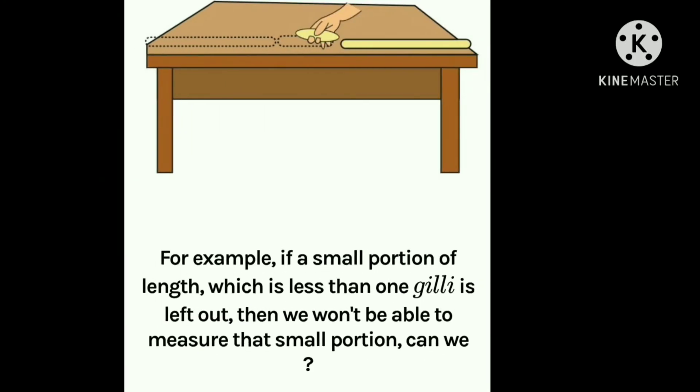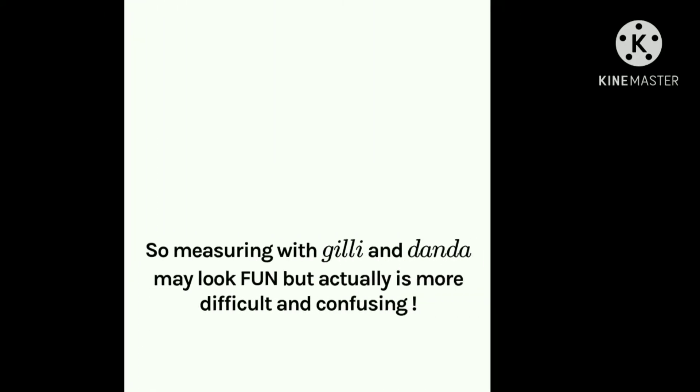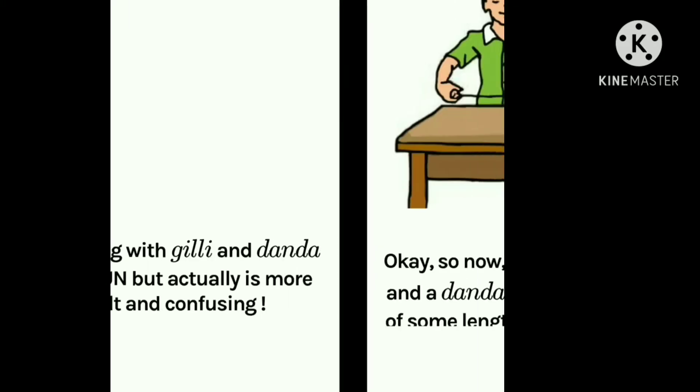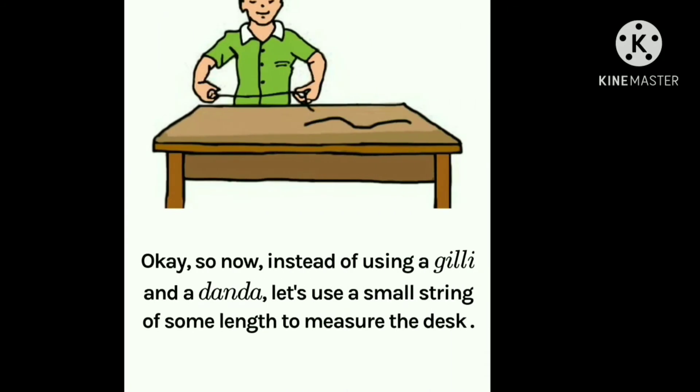If the length of the desk is equal to two dunda lengths and two gilli lengths, then we can easily draw a line in the middle of the desk by dividing it exactly into two equal halves with one gilli and one dunda. But if we use a different set of gillis and dundas, then the measuring may not be so easy. For example, if a small portion of the length — less than one gilli — is left out, then we won't be able to measure that small portion. So measuring with gilli and dunda may look fun, but it is actually more difficult and confusing.